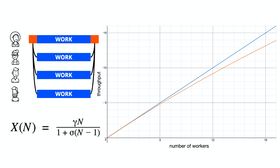Accounting for this contention, queuing, and waiting aspect of the system, we end up with Amdahl's law. We add to the denominator of the equation the component sigma, which represents the fraction of the work that cannot be parallelized. Even with just one percent (0.01) of the work being serialized in this manner, we start seeing diminished throughput on the graph.